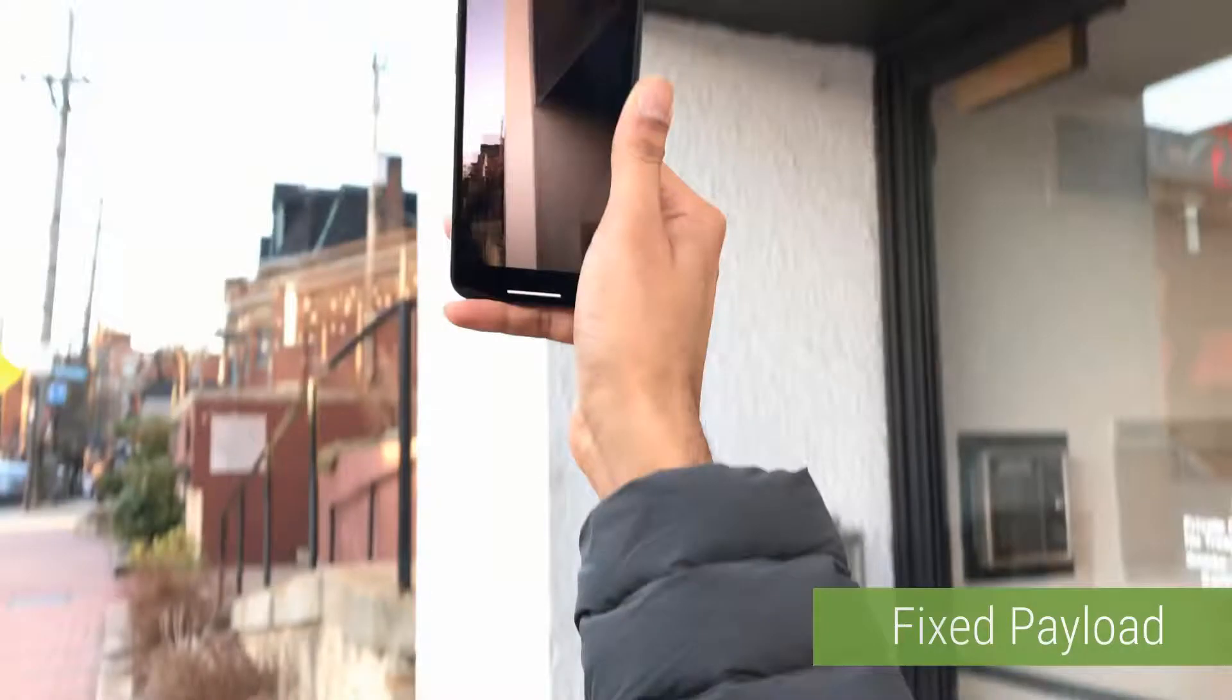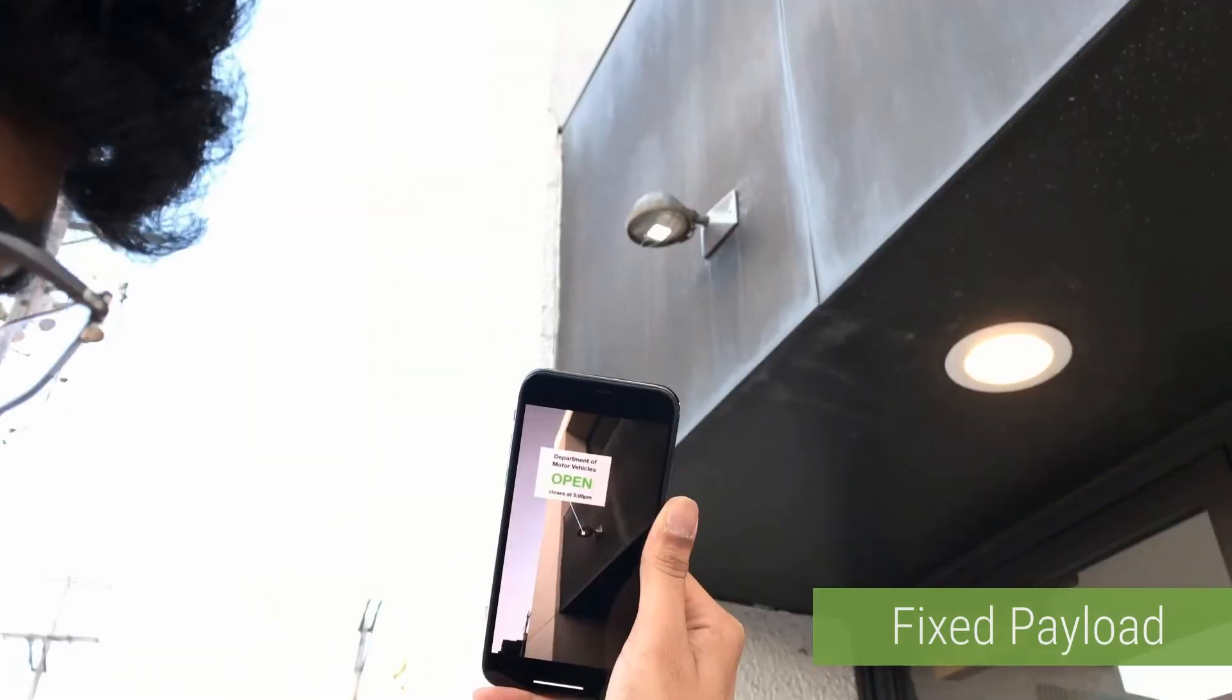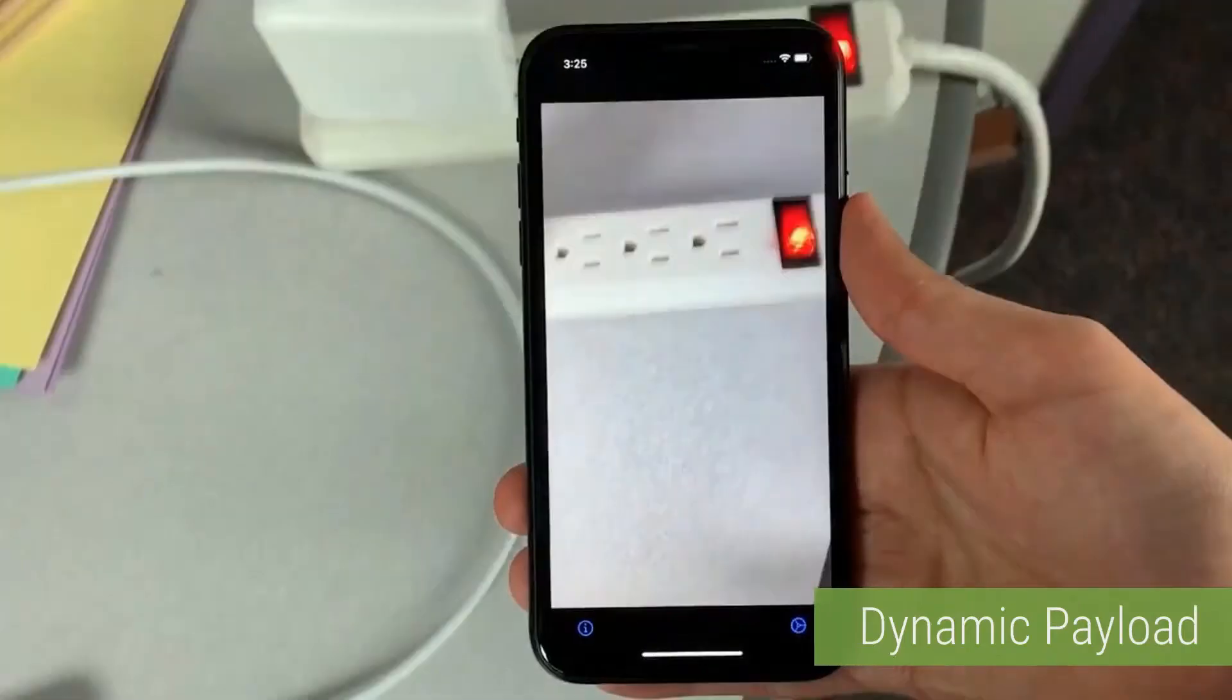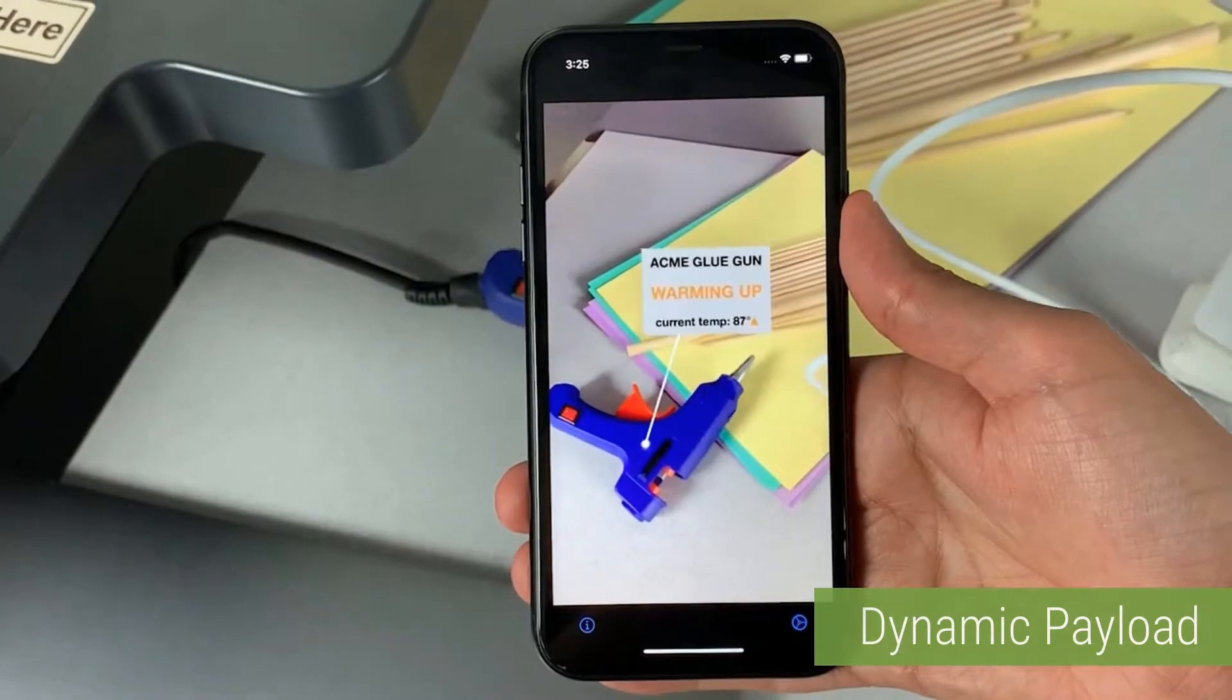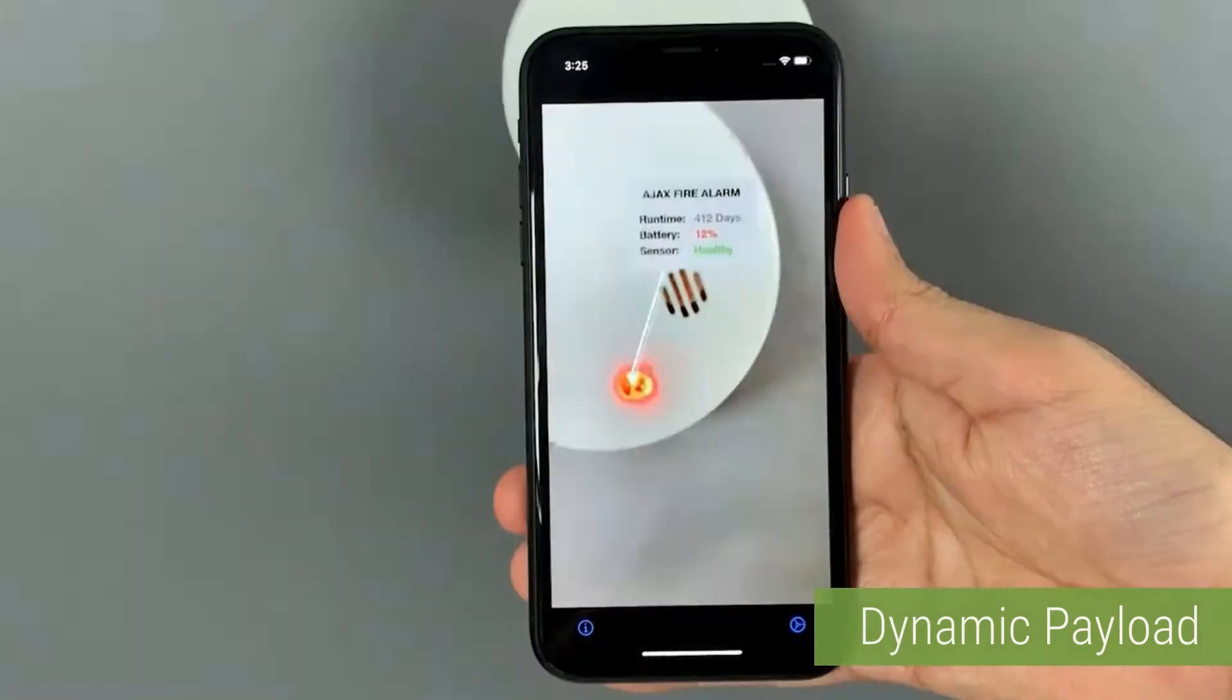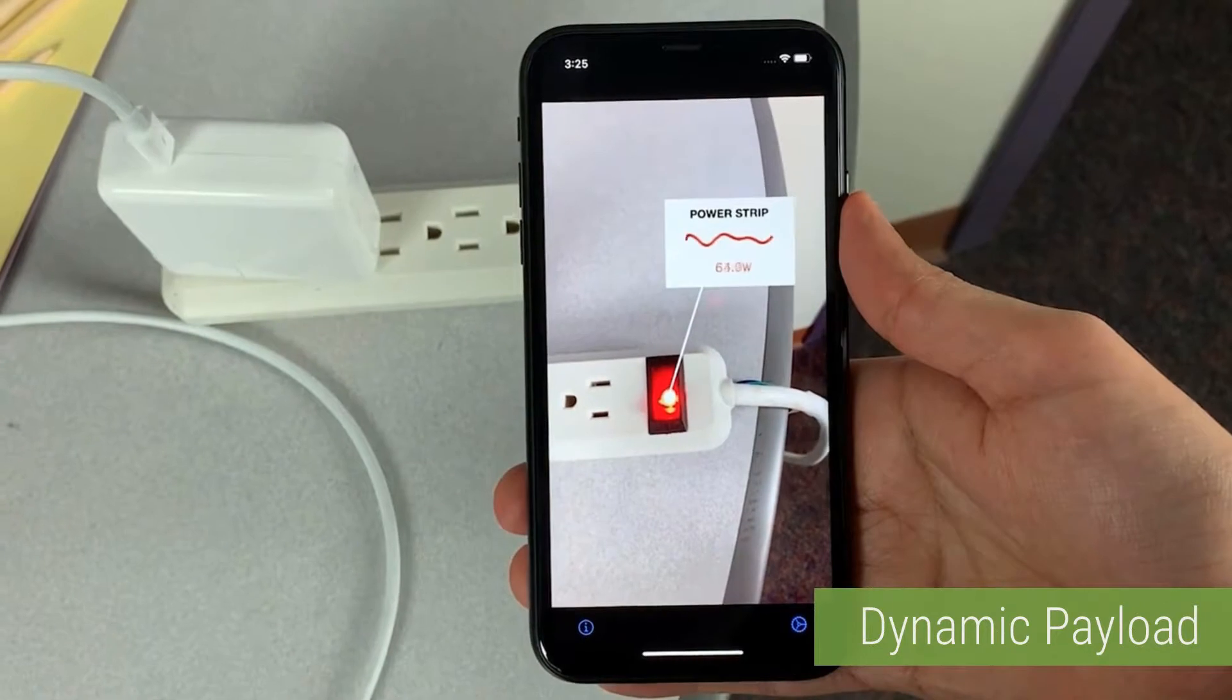Now that we have looked at the system of Light Anchors and what it can enable, let's look at a few example use cases on how it can be used in the real world. First and most straightforward is to transmit fixed data. For example, the name of a building and its opening hours, as you can see in this video. More interesting is the ability to encode a small dynamic payload. For example, this power strip reports its live power draw. This glue gun provides its current temperature and use status. And this fire alarm outputs its battery life.